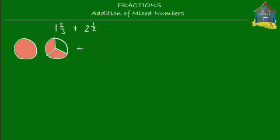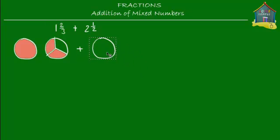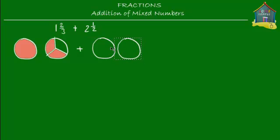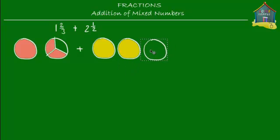Now for two and a half, we make more copies of the pizza. We have one more pizza and another pizza — so these two yellow cheese pizzas represent the whole number part, which is two. These two pizzas together represent the whole number two.